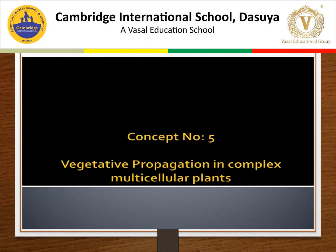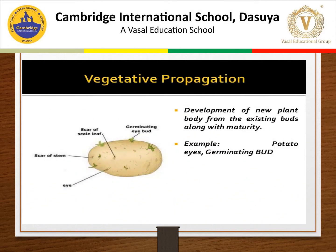Vegetative propagation is a form of asexual reproduction where part of a plant body — such as roots, stem, or leaf — develops into a new plant. It is a very simple method of reproduction in plants. Most ornamental plants, grasses, orchids, medicinal plants, and plants of economic importance are grown by vegetative propagation. There are natural methods and artificial methods of multiplication with the help of vegetative propagules.